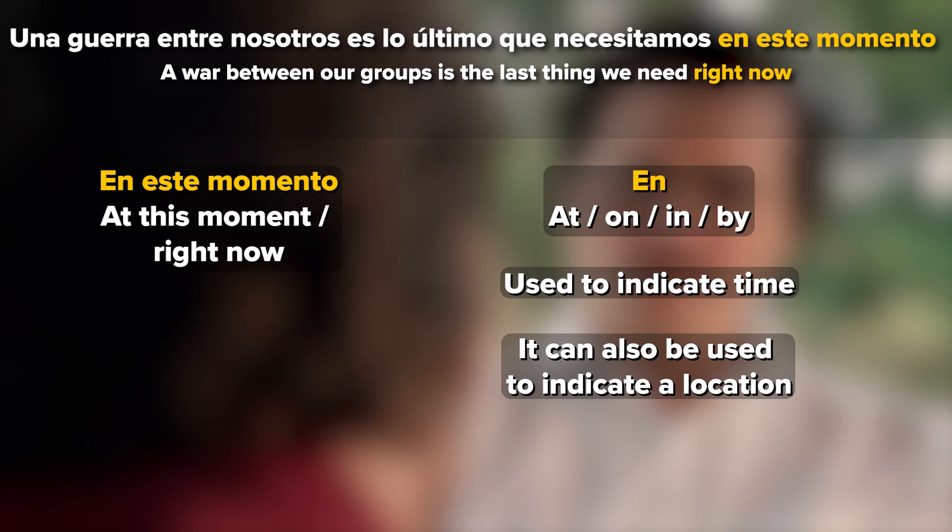If we go to the FluentU video dictionary, we can easily find an example. Or 'en' can indicate a means of transport, as in...